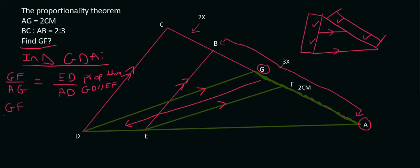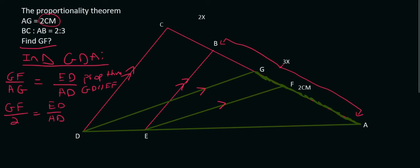So we can say GF over AG. Now, AG, they told us, is 2 centimeters. ED and AD, unfortunately, we have nothing, we don't have any information about them just yet. But at least now we have a road map. We know that we need to now go and find ED and AD.